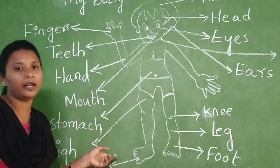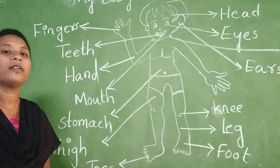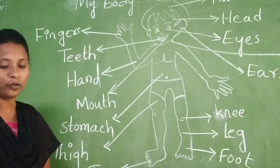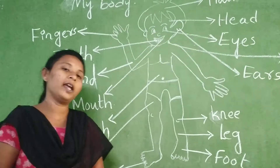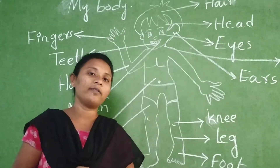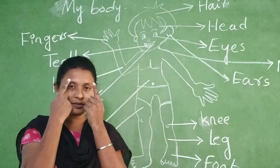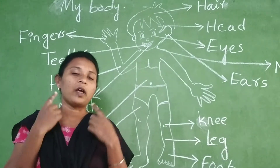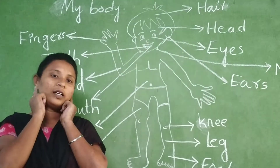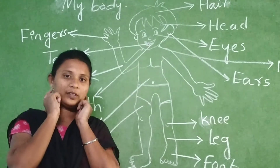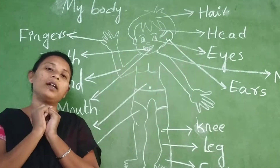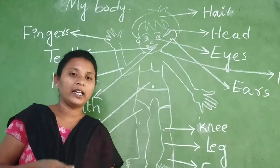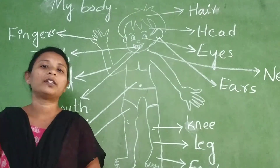Children, I hope you have understood this concept. Now I will ask you a few questions — answer the questions. How many eyes do you have? Two eyes. How many ears do you have? Two ears. How can you eat? I can eat with my mouth.